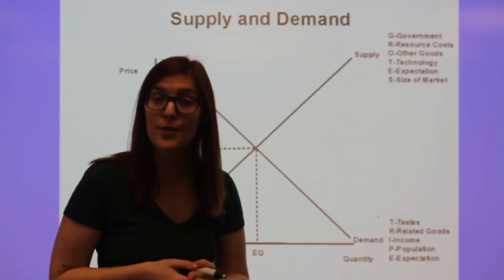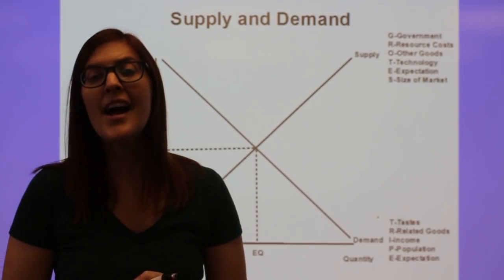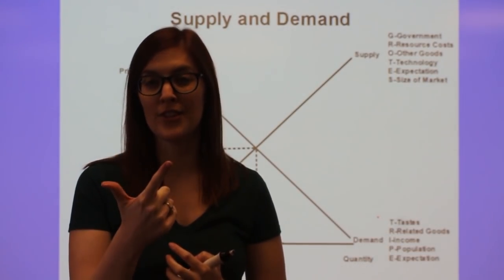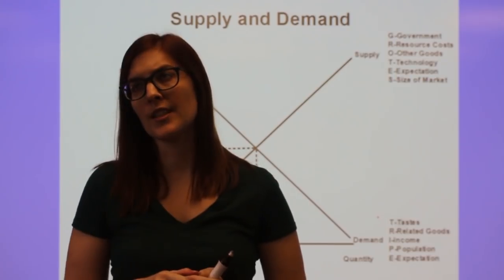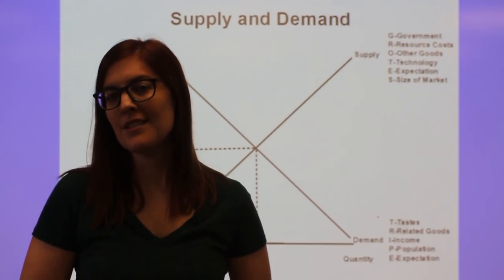Income deals with the types of goods we buy when our income changes. And the two types of goods we buy are normal and inferior goods. That can be a little tricky.